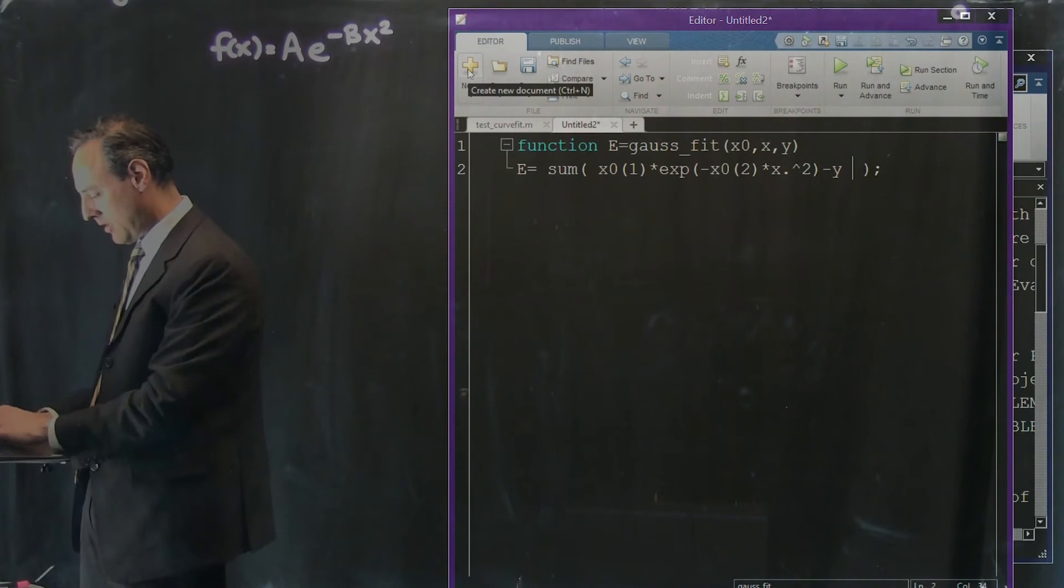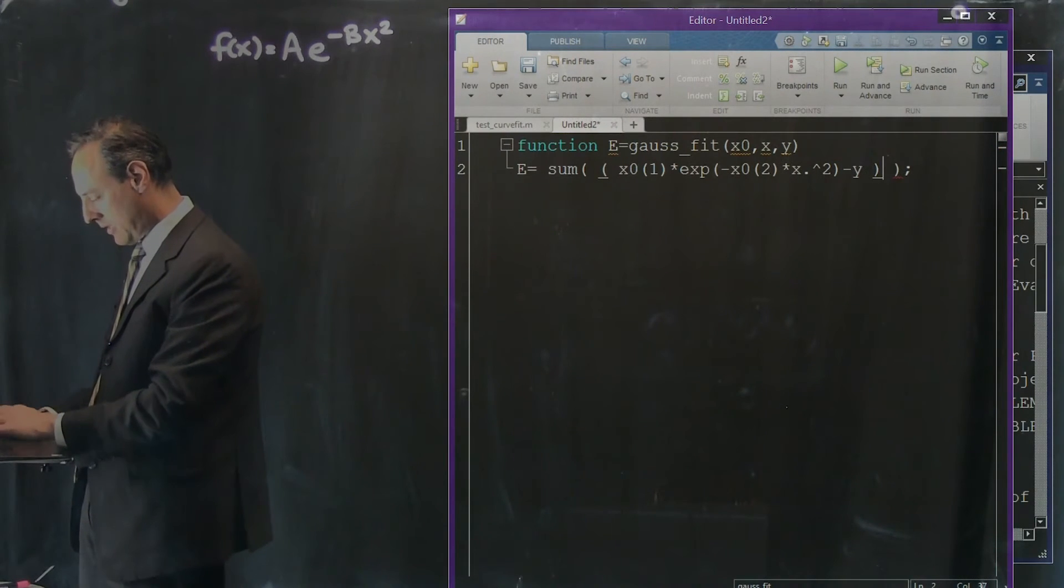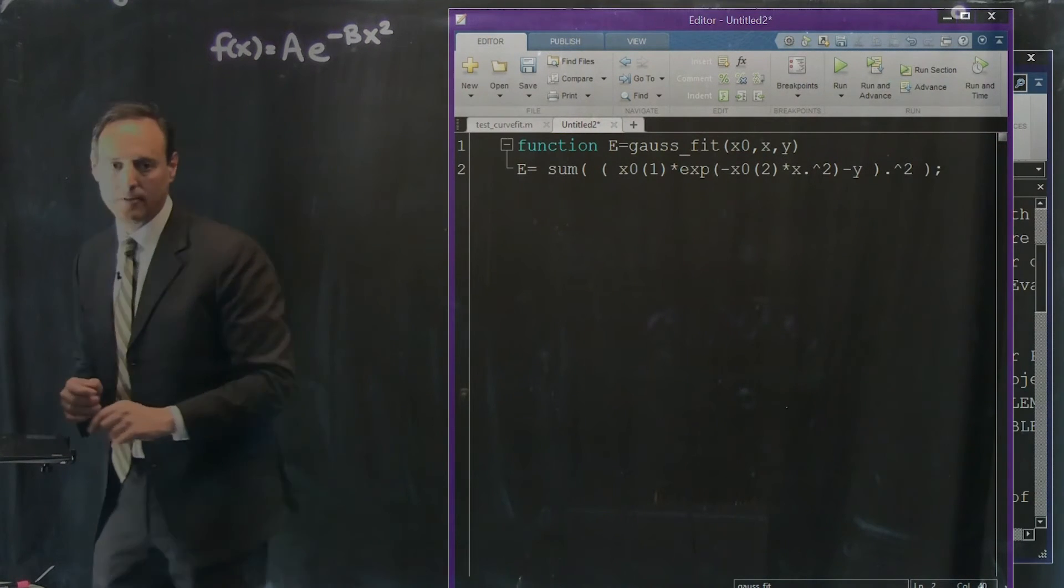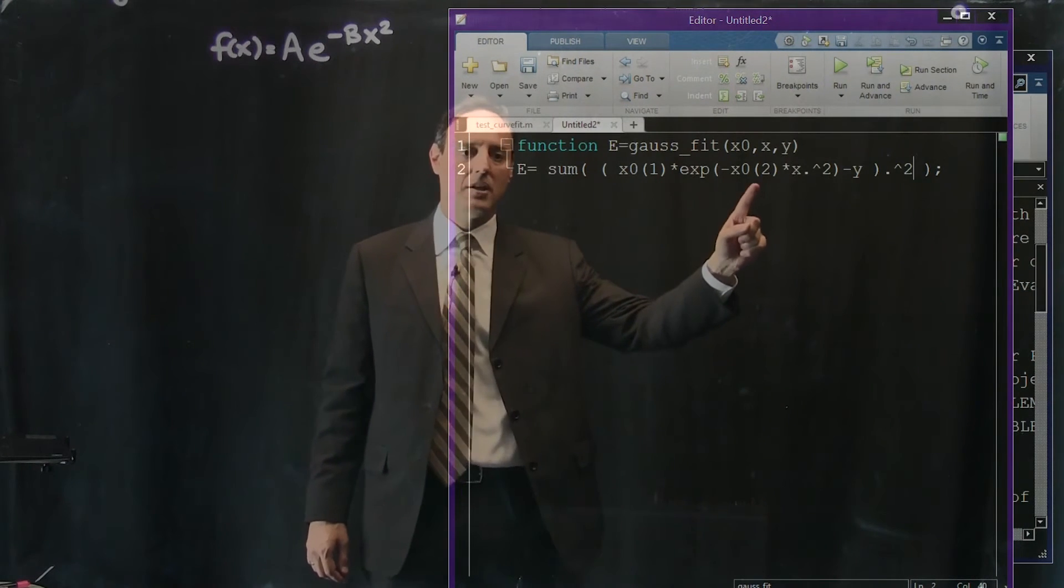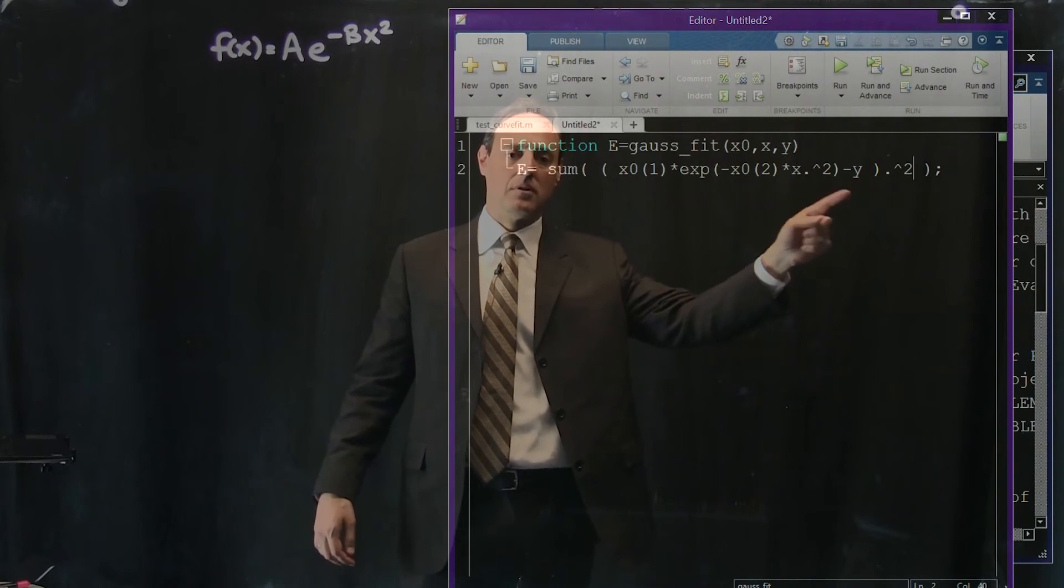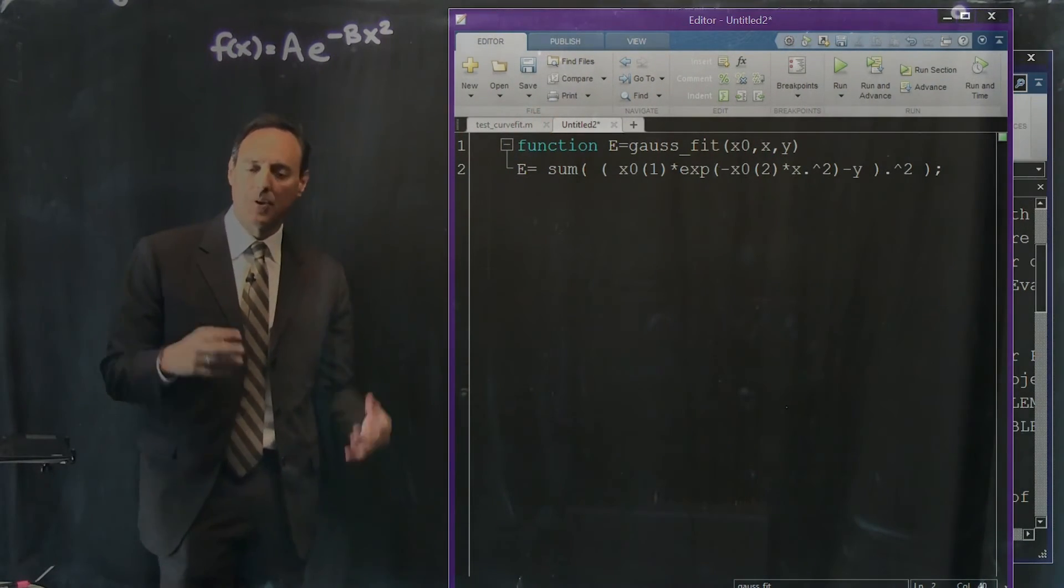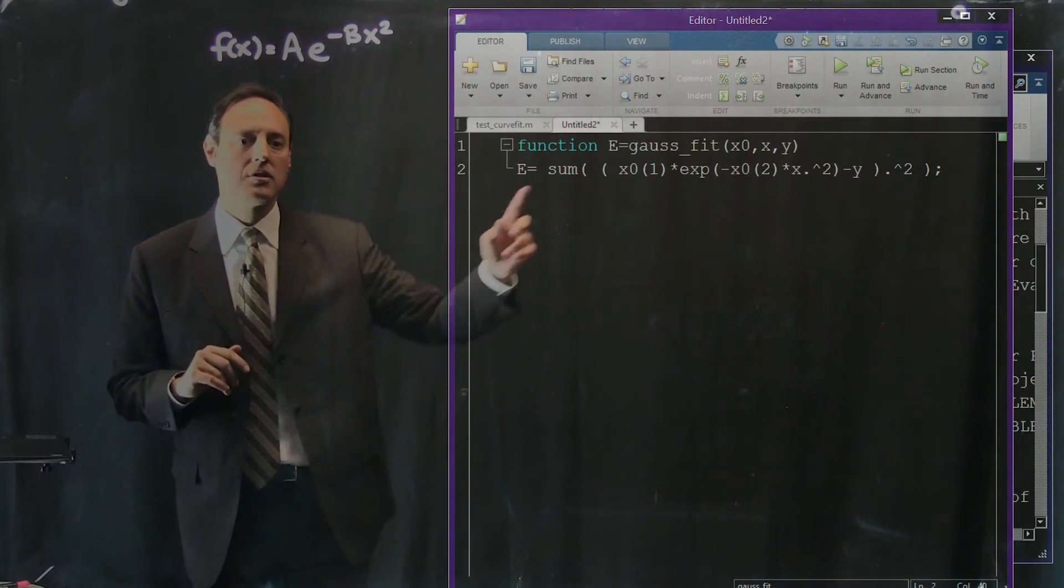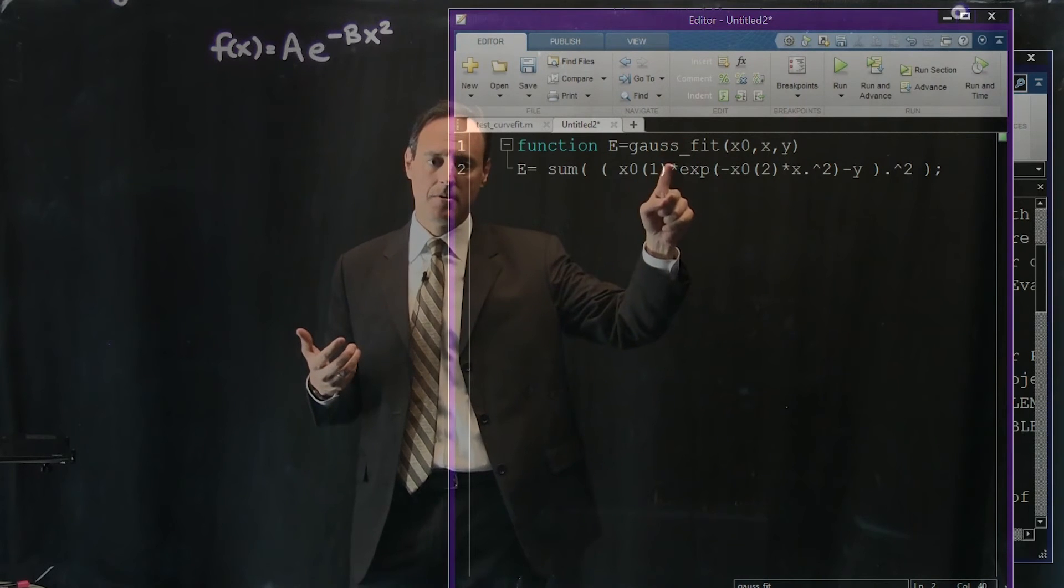So the way this is going to work is you're going to say, well, x0(1) that's my a value here, and this is x0(2) times I have this Gaussian, x0(2) times x squared minus y. So that is the function and let me close this off because I have to basically square that. So notice what I did here: this is a times e to the minus b x squared minus the actual values squared. So that is the least square fit algorithm.